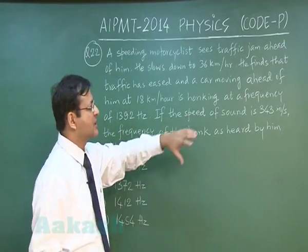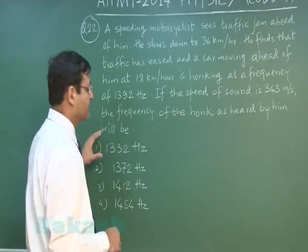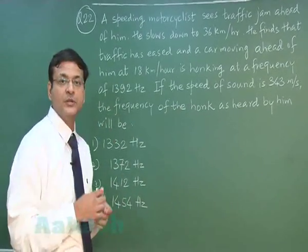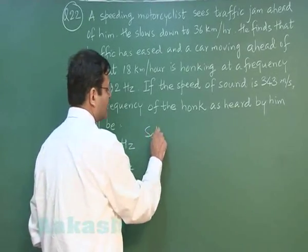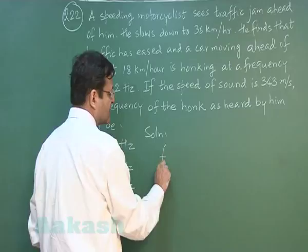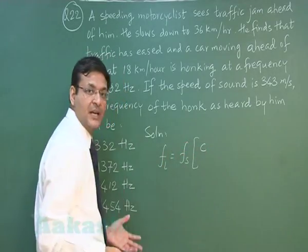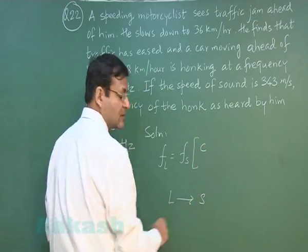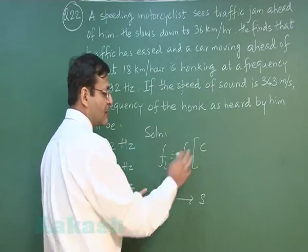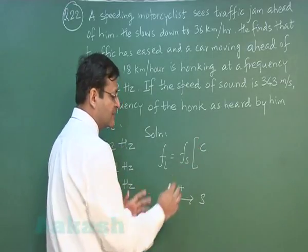This is the frequency of the source given to you. If the speed of sound is 343 meter per second, then the frequency of the honk as heard by him, him means the motorcyclist who is working as listener here. Now you see the direct application of the formula: frequency heard by the listener equals frequency of the source times (c plus minus vL). Now you see listener to source direction is positive. Here both of them are moving in the same direction. That means source is moving away and listener is chasing him.